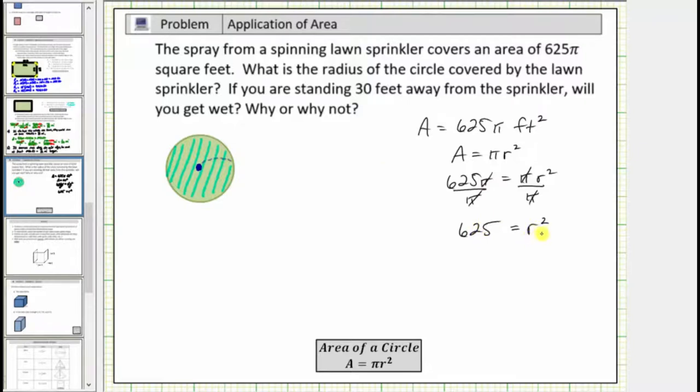So we're looking for some positive number times itself that equals 625. In order to undo the squaring, we can take the square root of both sides of the equation. And we know r has to be positive, so we're looking for the positive square root or the principal square root of both sides. Because r times r is equal to r², the square root of r² is equal to r. And because 625 is equal to 25 times 25, or 25², the square root of 625 is equal to 25.